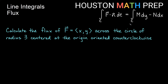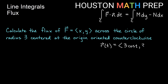We're going to calculate the flux of the field (x, y) across the circle of radius 3 centered at the origin, oriented counterclockwise. Our path r of t, traveling counterclockwise around a circle of radius 3 centered at the origin, has the parameterization 3 cosine of t comma 3 sine of t, with t going from 0 to 2π.